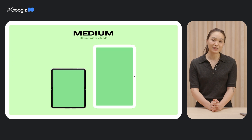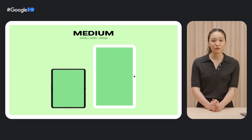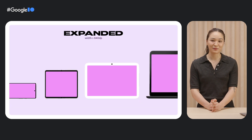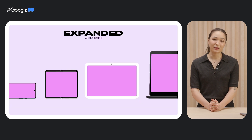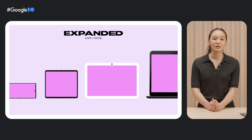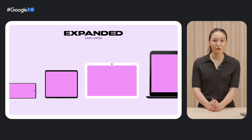Our next window class is medium, which includes tablets and unfolded foldables, both in portrait orientation. And lastly, we have expanded. The expanded window class captures phones in landscape orientation, unfolded foldables, tablets, and desktops. Our talk today focuses on these medium and expanded sizes, helping you get the most out of that added large screen real estate.